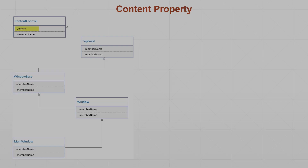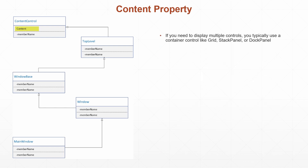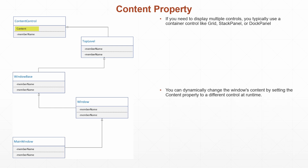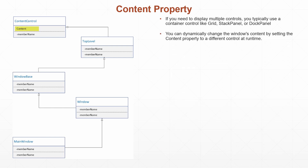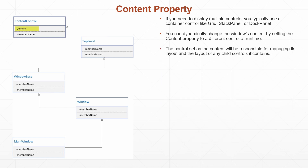The Content property — if you need to display multiple controls, you typically use a container control like Grid, StackPanel, or DockPanel. You can dynamically change the window's content by setting the Content property to a different control at runtime. The control set as the content will be responsible for managing its layout and the layout of any child controls it contains.